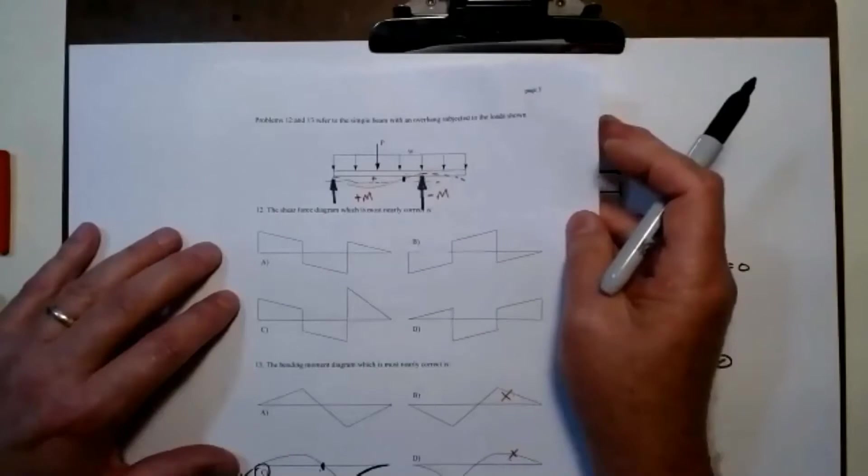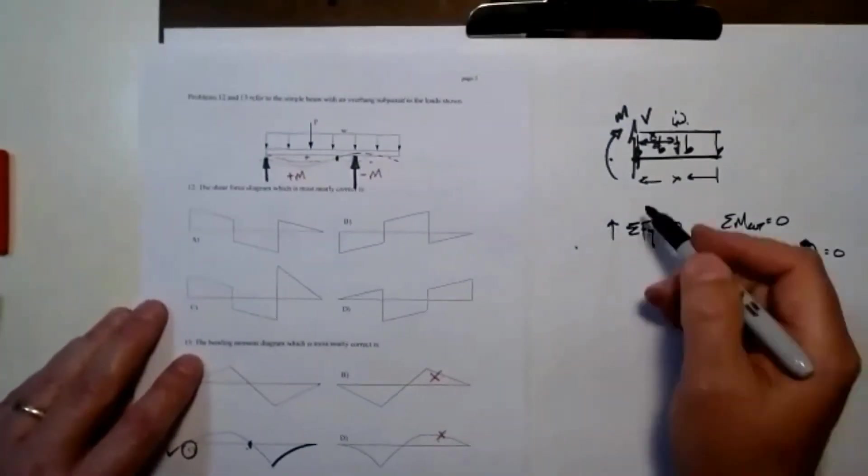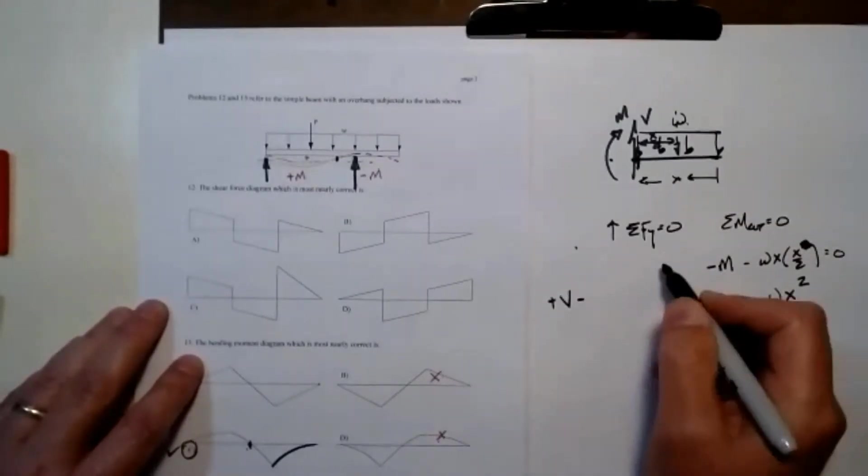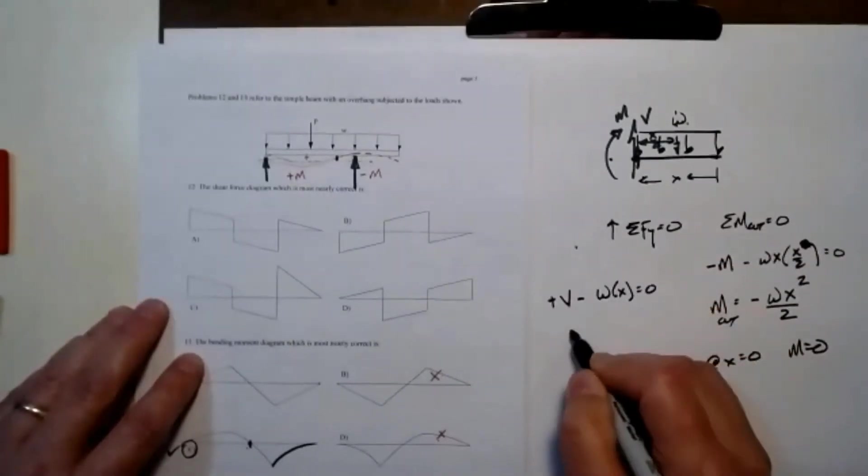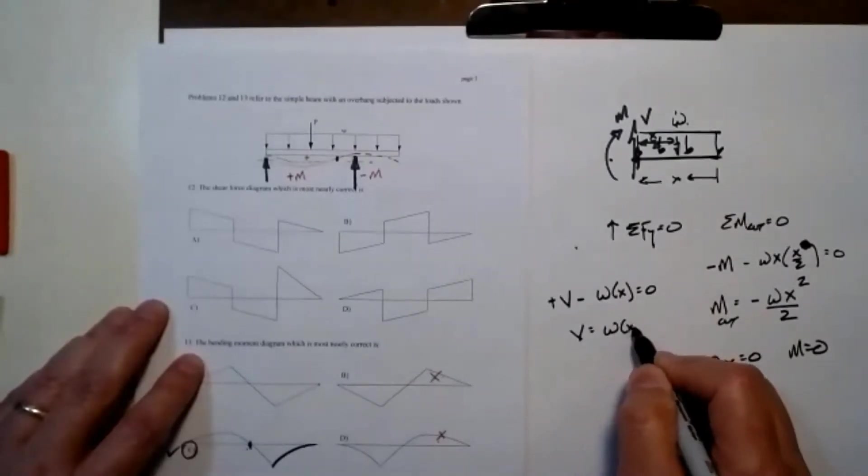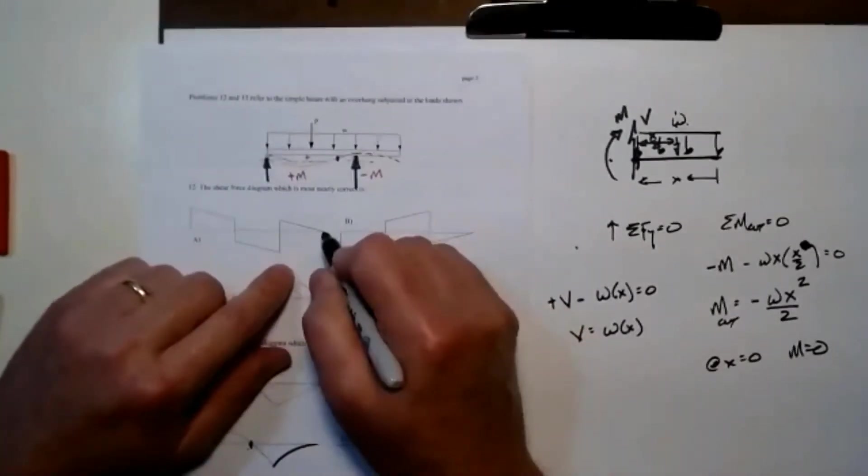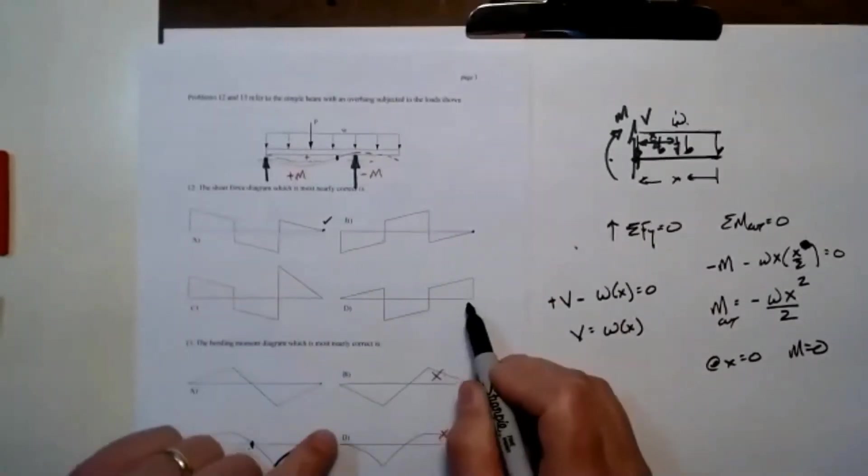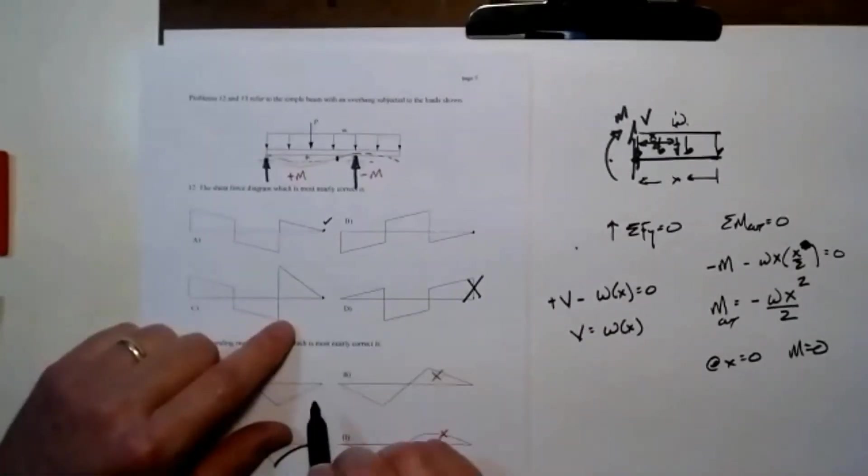If we look at the shear diagram, let's see if we can solve something here. The shear here is going to be positive shear minus W times X equals zero. So my shear is equal to W times X. My shear is going to be changing linearly. It's going to be a value of zero on this free end. Well, that one checks at zero at the free end. That's zero at the free end. This one's not zero at the free end, can't be that one. Could be that one.